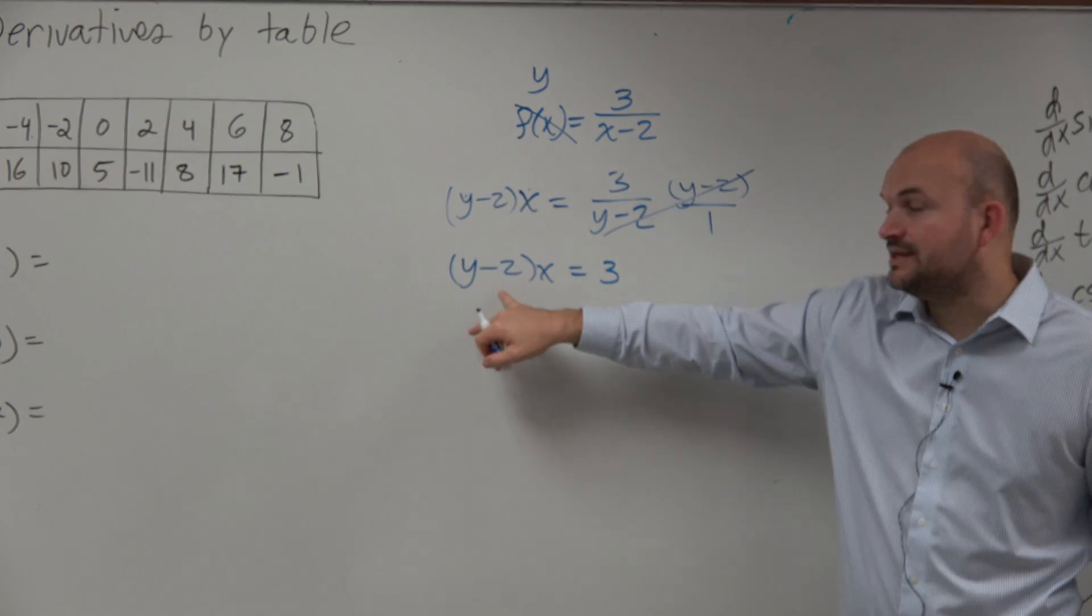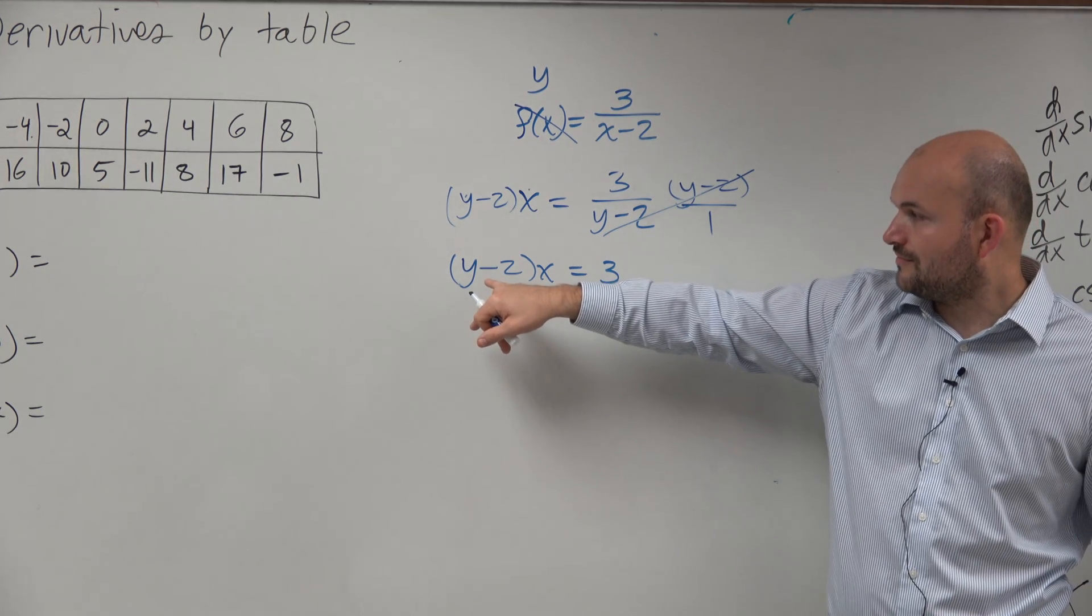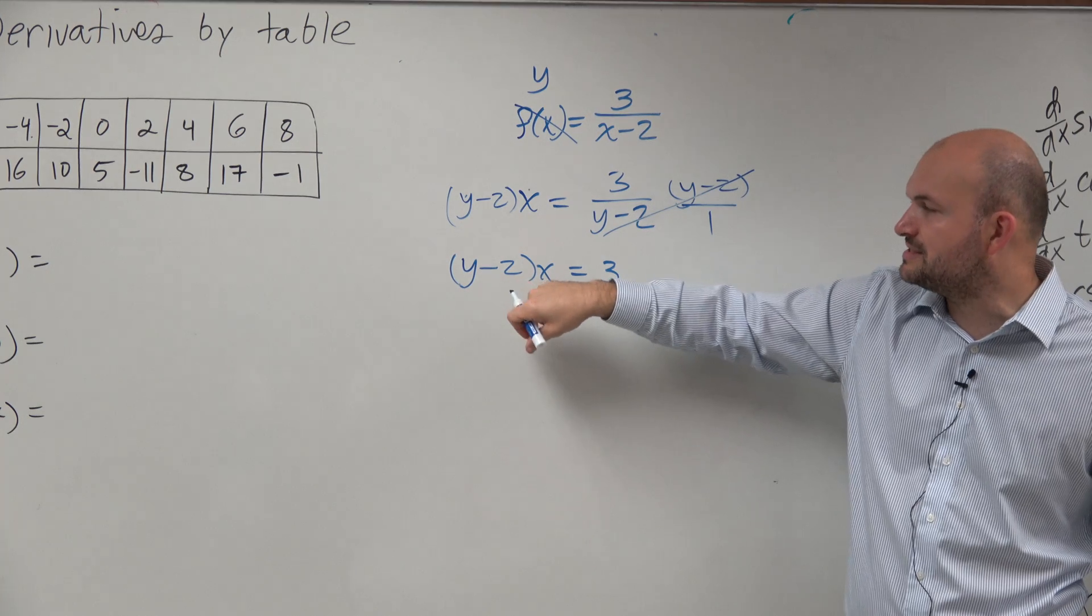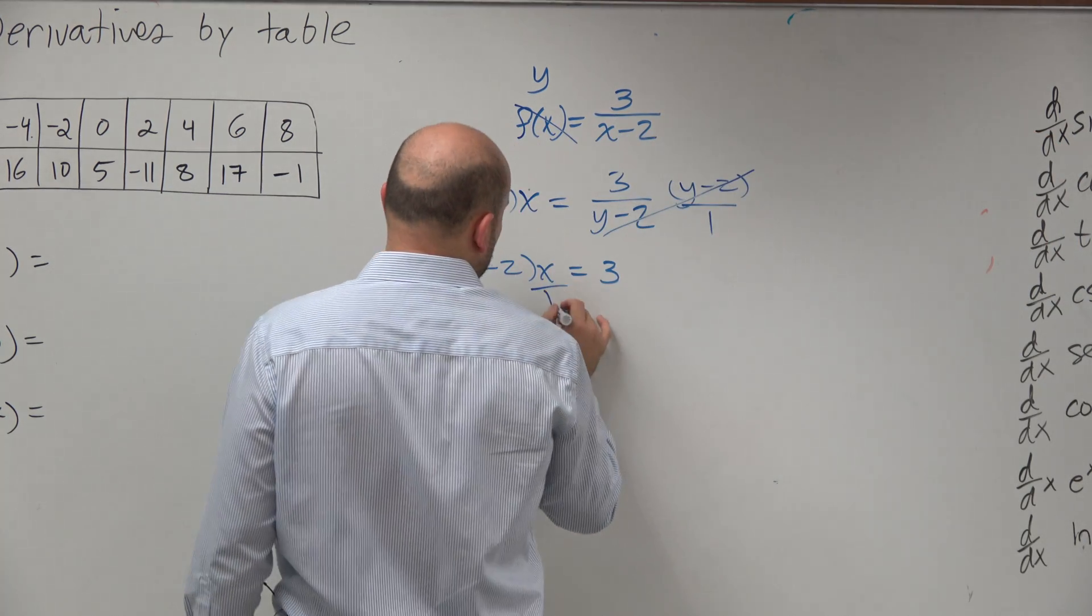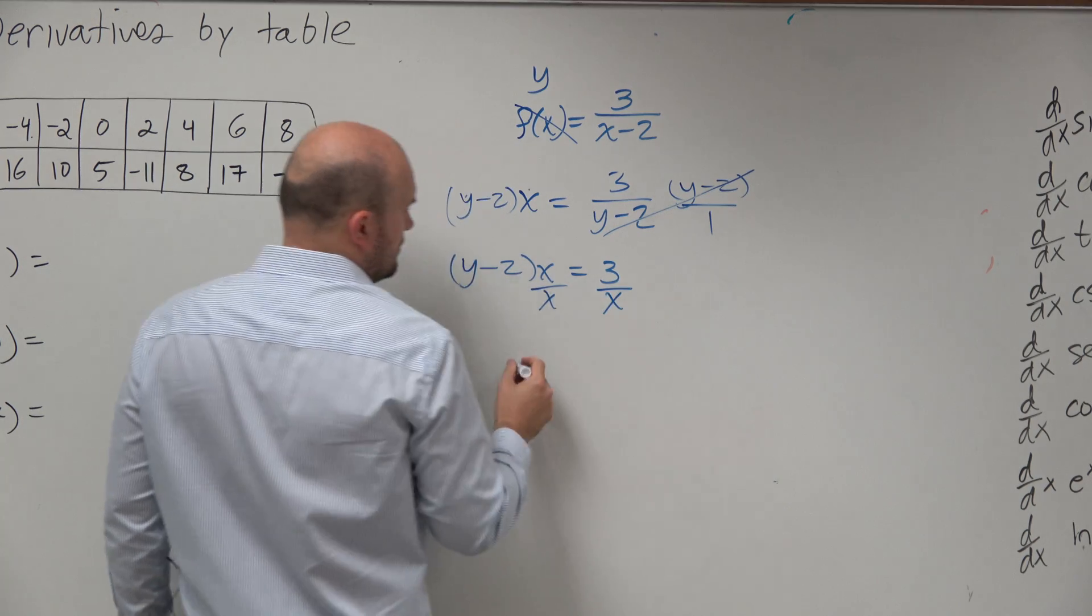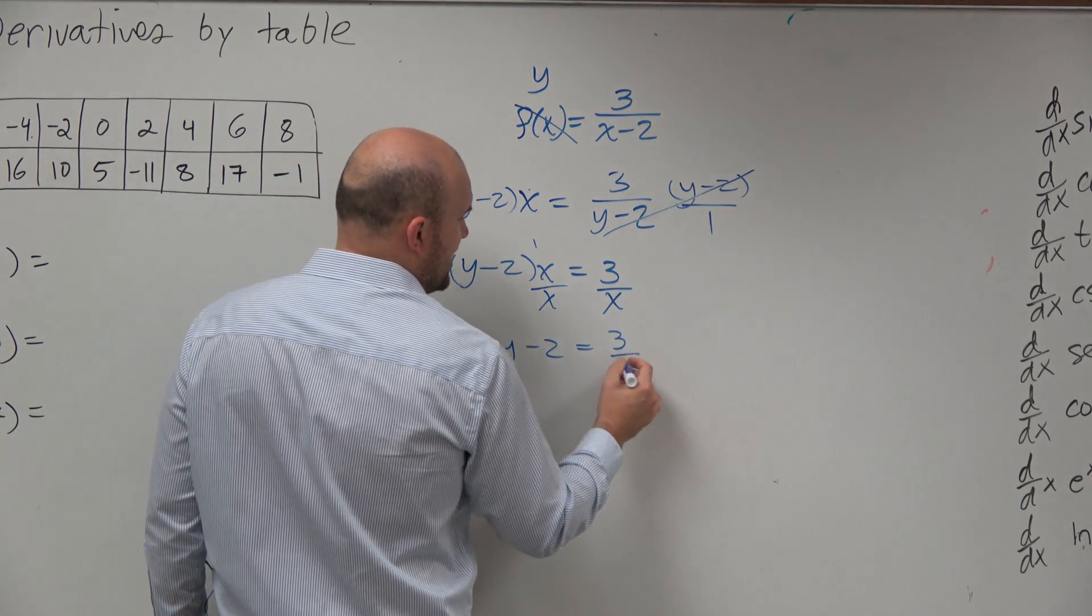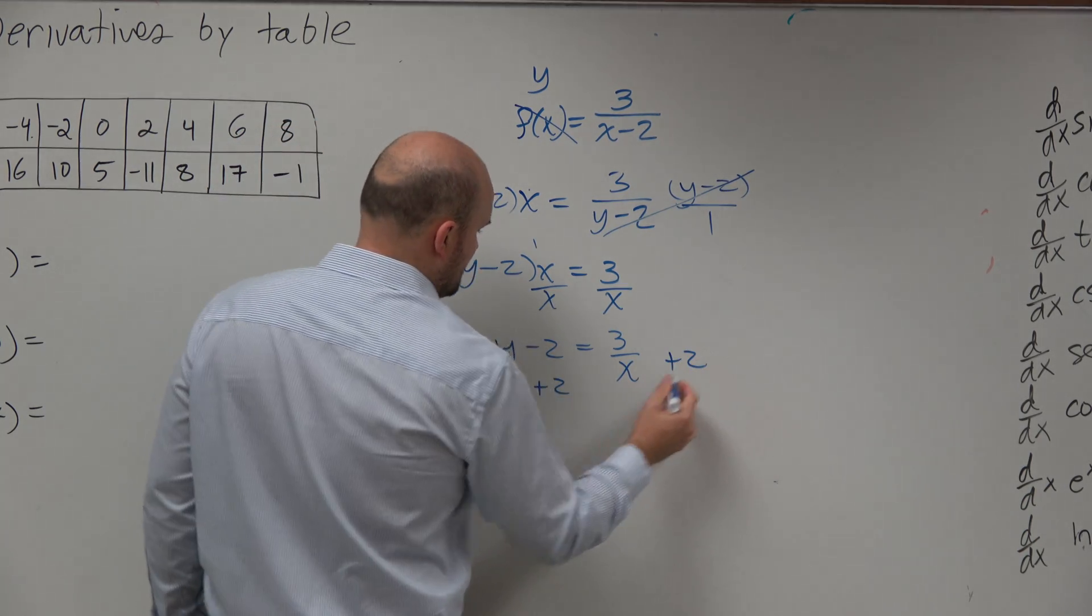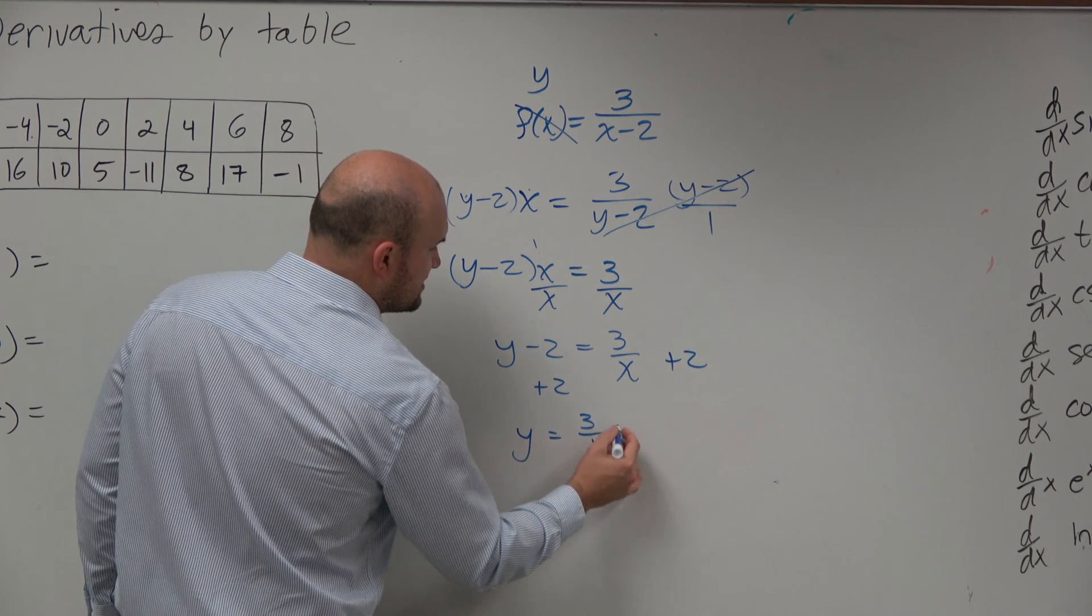Now, all we simply need to do is solve for y. So I could have distributed that, but in this case, what I'm going to do is just, you can get the same answer, but I'm just going to divide by x on both sides. That divides to 1. Now I'm left with y minus 2 equals 3 over x. Then I'll just add a 2 on both sides. So therefore, I have y equals 3 over x plus 2.